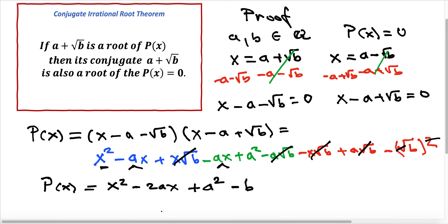And as we see here, a and b are rational numbers as we assumed, and therefore this polynomial function is a polynomial with rational coefficients and a rational constant, which completes the proof.